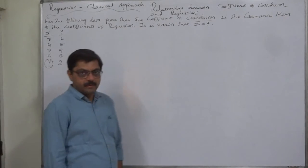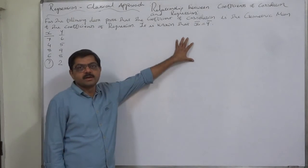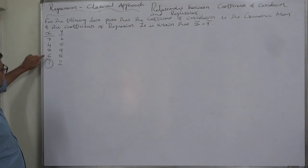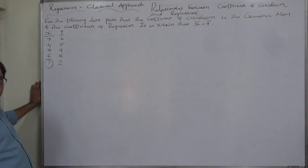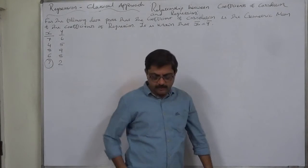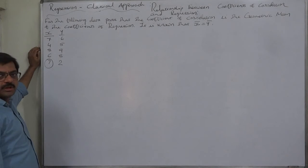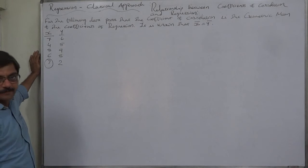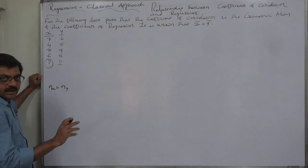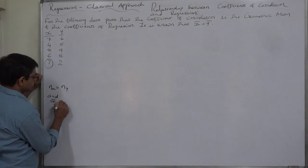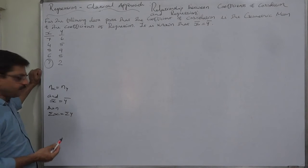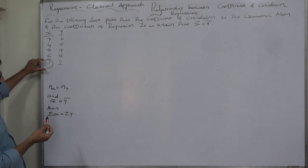It is known that x̄ equals ȳ — this is for this particular data only and cannot be a permanent relationship, but it will be useful in solving the problem. The data is: x = 7, 4, 8, 6, and a missing fifth value. y = 6, 5, 9, 8, and 2. We need to find that missing value first.